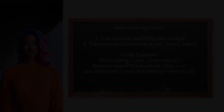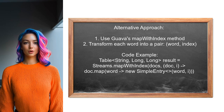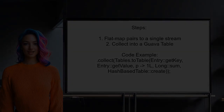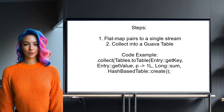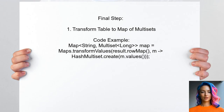Another alternative approach involves using Guava's utilities to handle streams effectively. The user suggests utilizing the mapWithIndex method to assign an index to each inner stream, transforming each word into a pair of the word and its document index. Next, they recommend flat mapping these pairs into a single stream and collecting them into a Guava Table. This table structure allows you to track the word counts per document index. Finally, if you need a map structure, you can transform the table into a map of multisets using Guava's transformValues method.